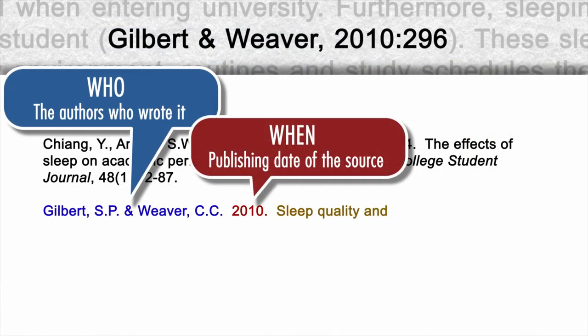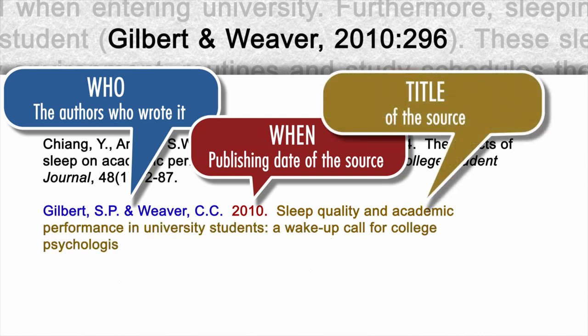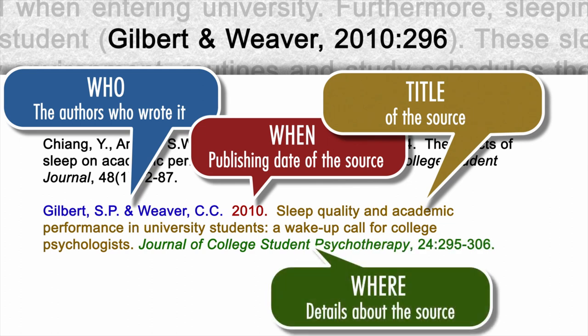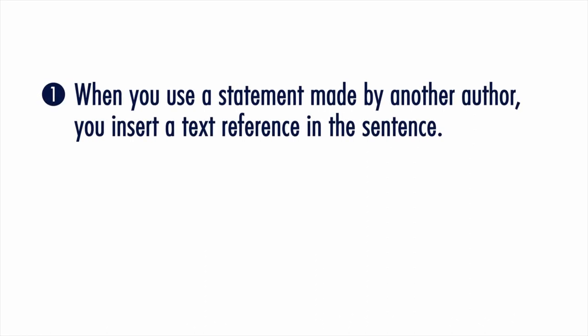Before we focus on how some of these styles differ, let's recap on text references, also known as citations. When you use a statement made by another author, you insert a text reference in the sentence. This is a shortened version of the entry in the reference list.